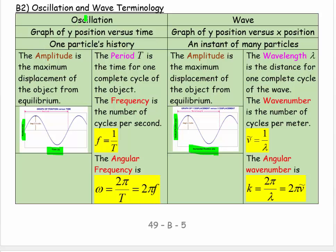Be careful to separate oscillations from waves in your mind — they tend to get confused together. On the oscillation side, the left hand side, it's a graph of y position versus time: one particle's history over time. We can define the amplitude as the distance from the equilibrium position to either one of the extremes. In some areas, people talk about peak-to-peak amplitude — from the very top extreme to the bottom extreme — so peak-to-peak amplitude is twice the standard amplitude. Be careful about this, as a simple mistake can cause confusion. Amplitude is the maximum displacement of the object from equilibrium.